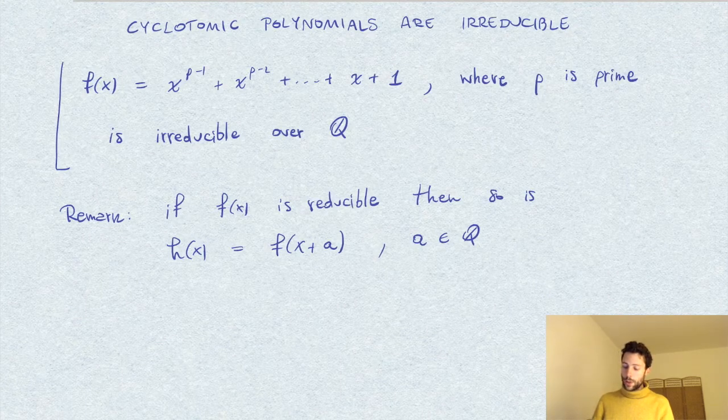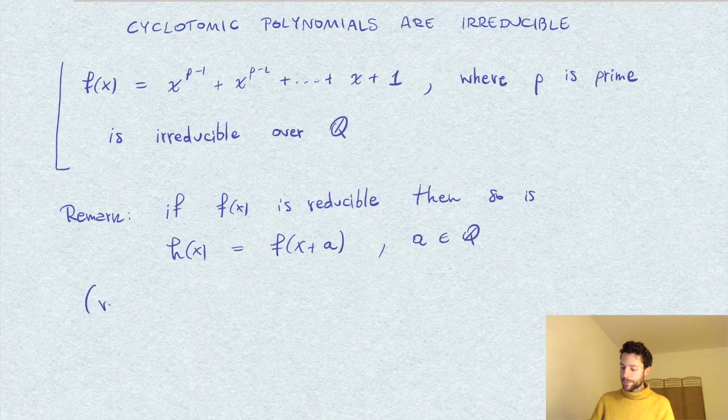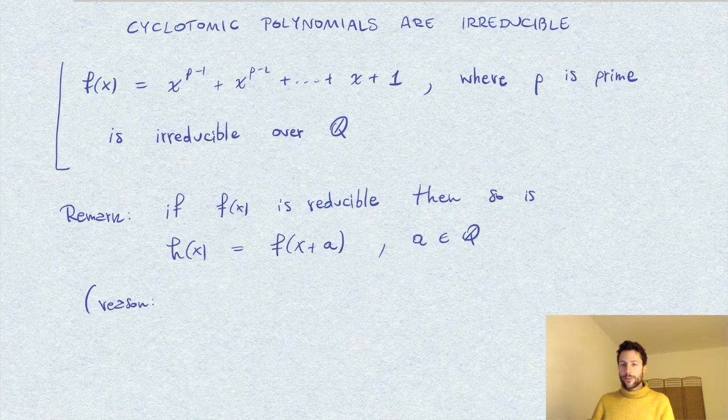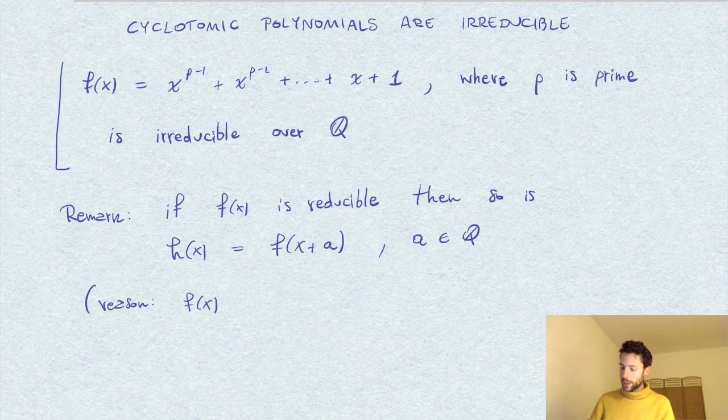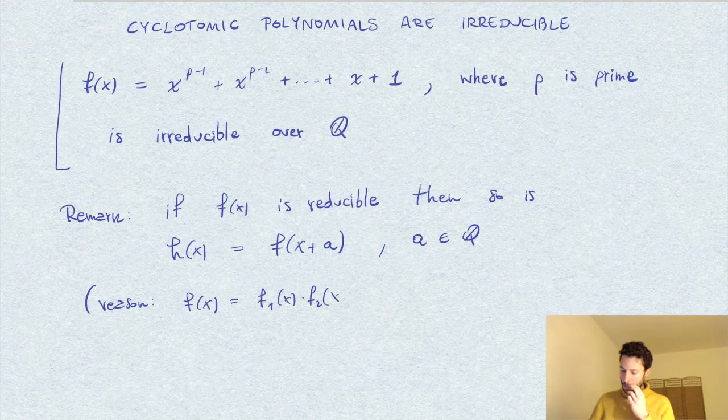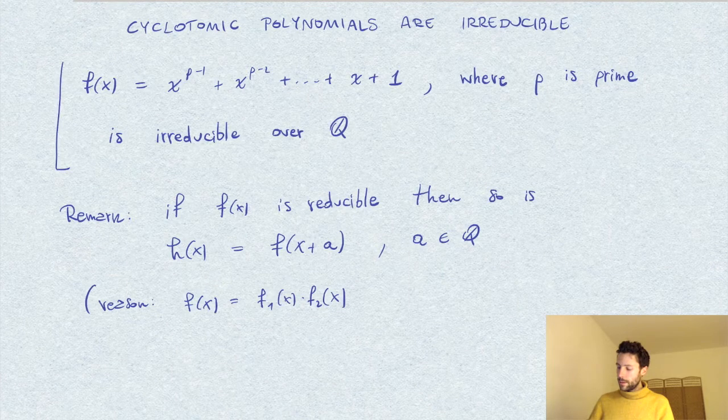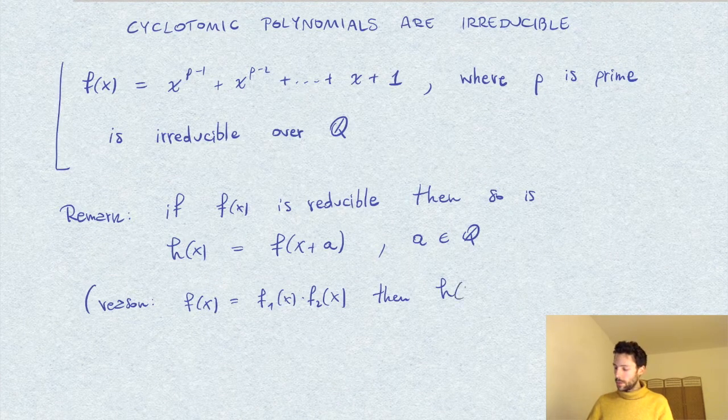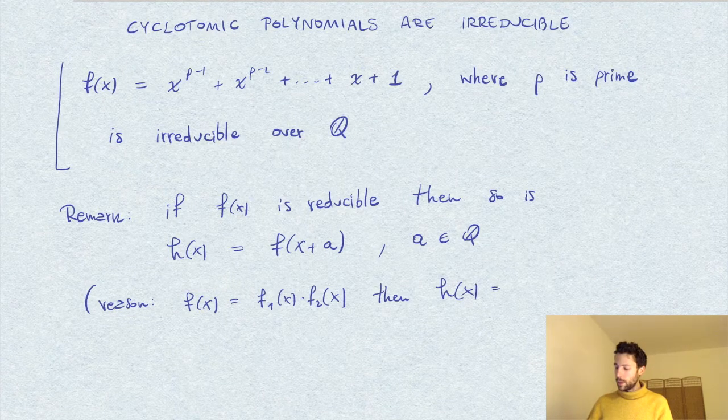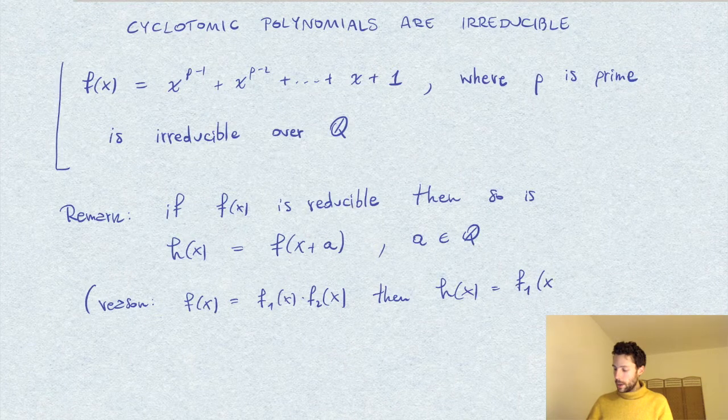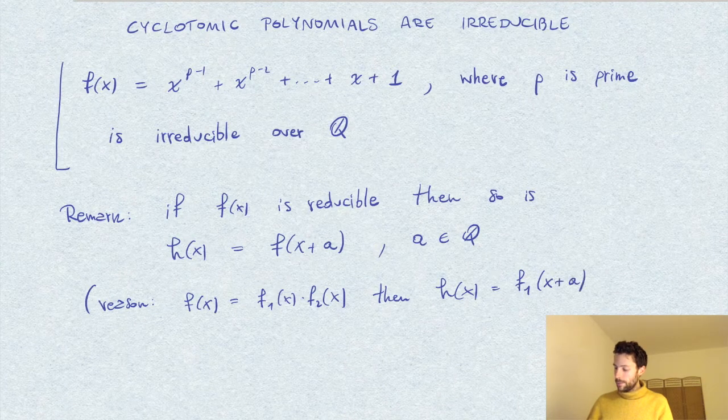So the reason, of course, is clear here. If f is reducible, suppose I can write f as a product of two polynomials of smaller degree. Well then, also h is reducible, because I can write it as f1 of x plus a times f2 of x plus a.